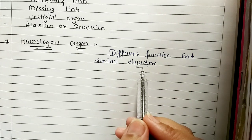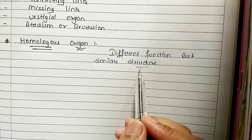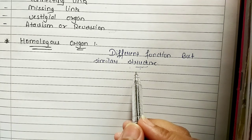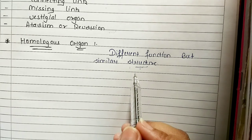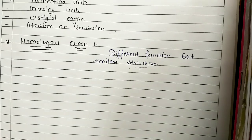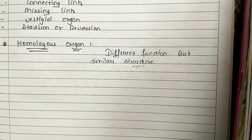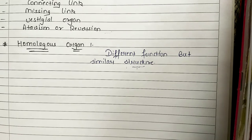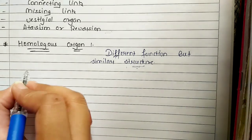Don't say that the structure is the same shape — it doesn't relate to shape. It is related to the same origin. Example: